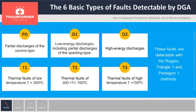Six basic types of faults are detectable by DGA: corona partial discharges PD, low energy discharges D1, high energy discharges D2, and thermal faults T1, T2, T3 of different temperatures. They are detectable, for instance, with Triangle 1 and Pentagon 1.